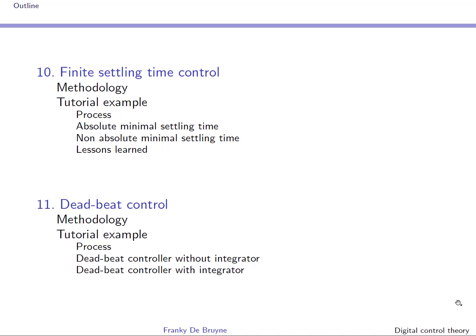In section ten, the desired closed loop reference model evolves from a transfer function to a polynomial in Z minus 1. This results in a finite settling time. When, in addition, we impose the controller output to settle in a finite time, we obtain the so-called deadbeat controller.